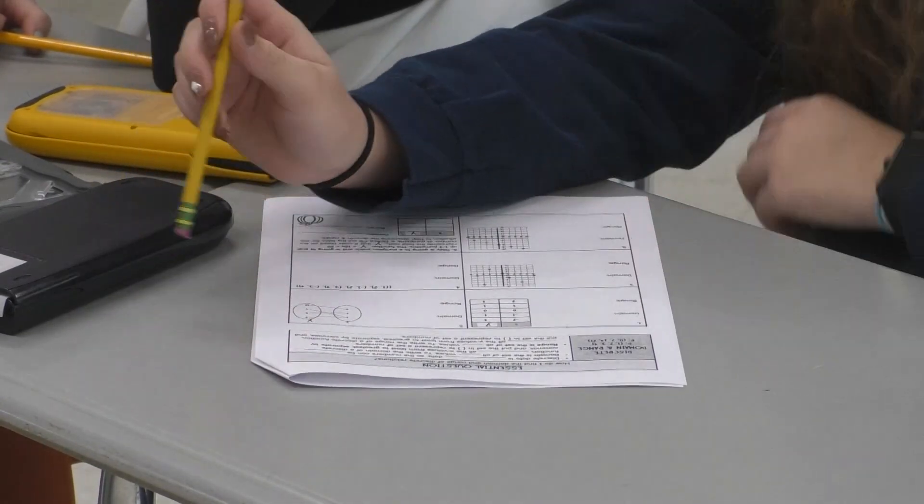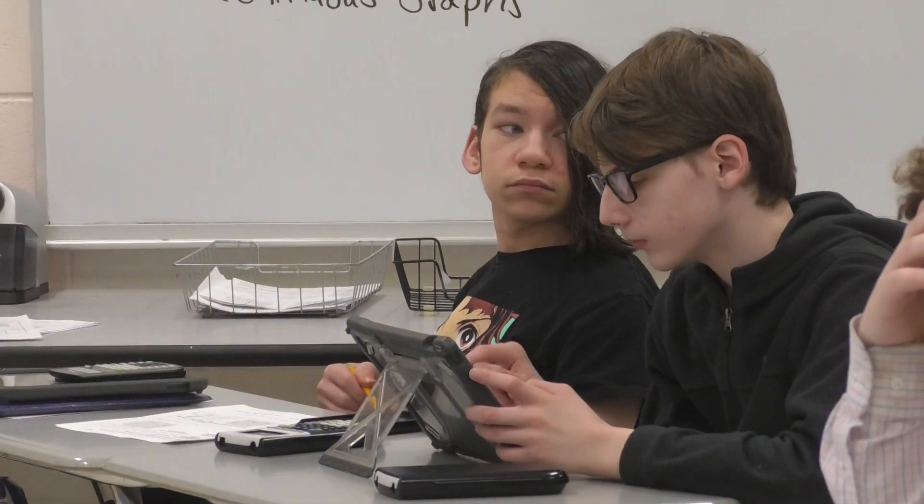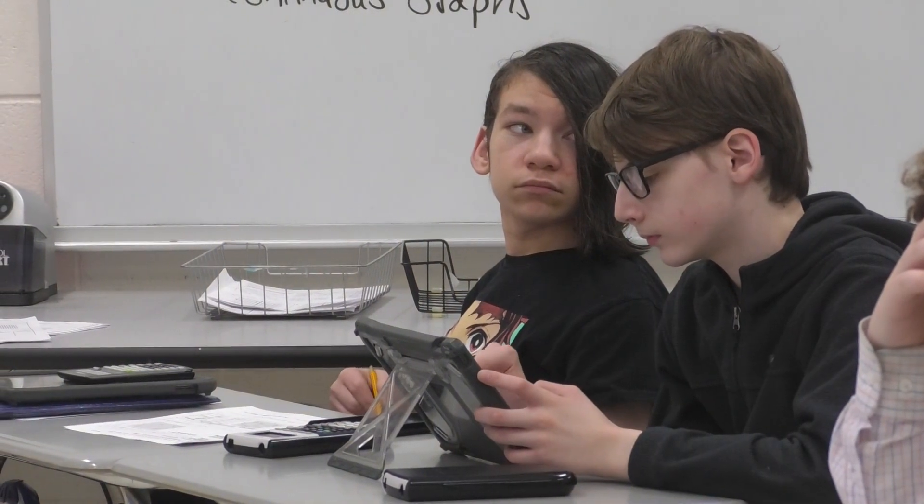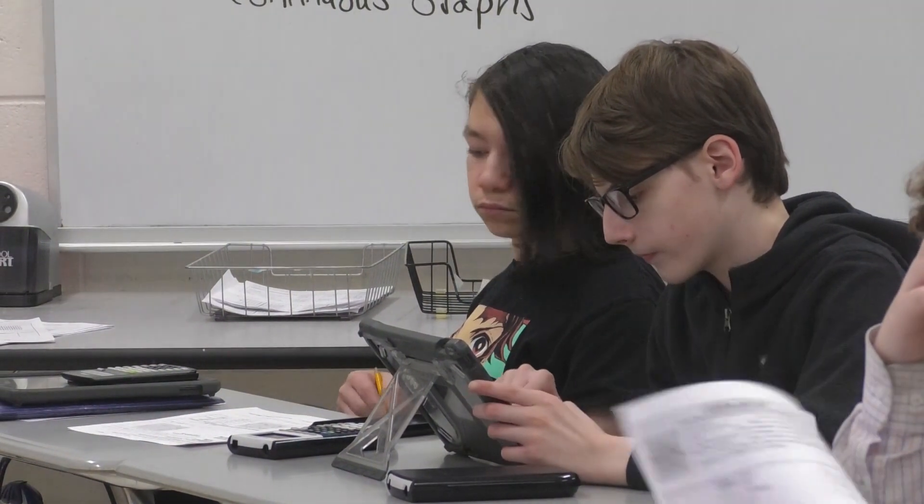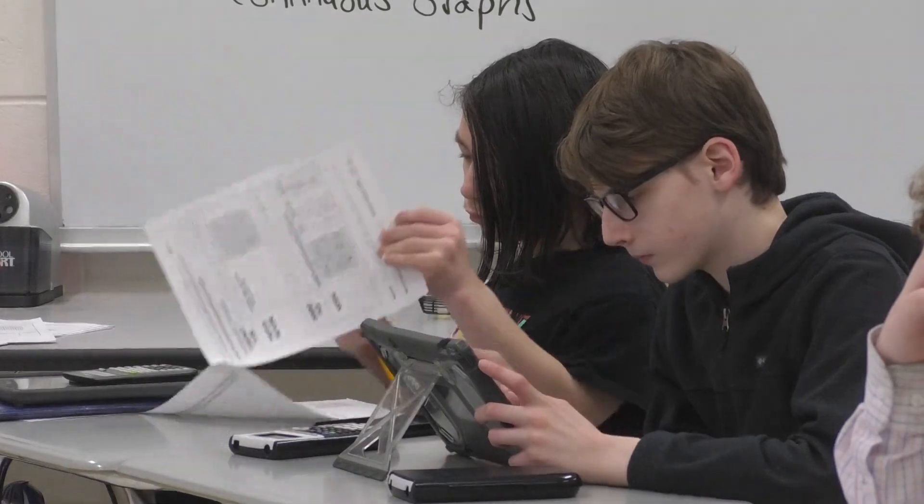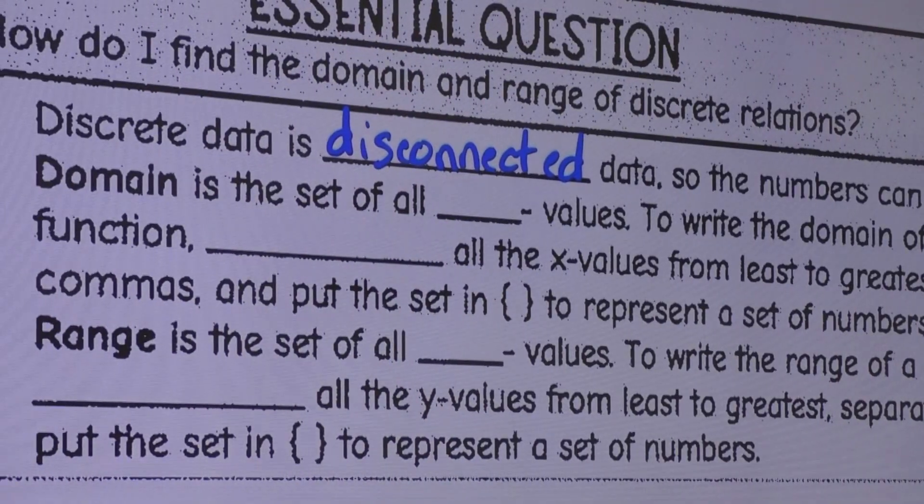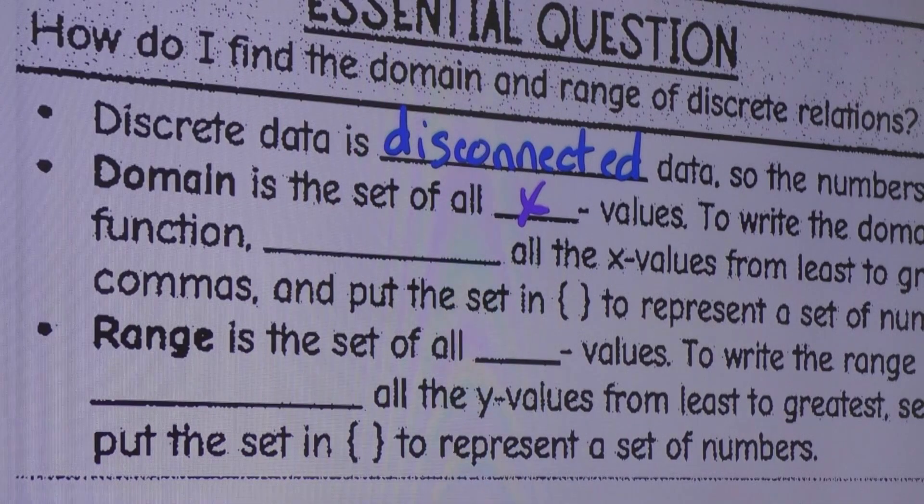The numbers, when you list them, that's exactly what you do. You take the set of domain and range, and they're numbers that can be listed. The domain is the set of all X values.